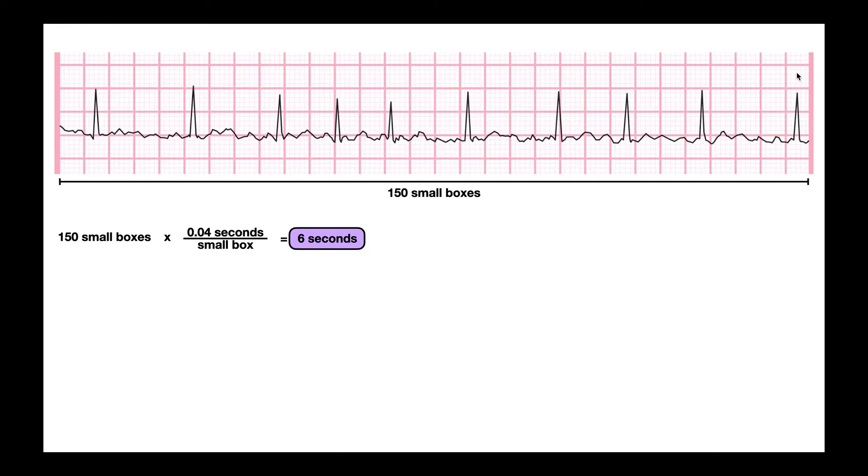So when we do the 6-second method, we're counting for everything within this entire normal EKG strip. To do the 6-second method, I'm going to count the number of QRS complexes. There's no special cutoff that you have to do because the entire strip is defined as 6 seconds. So I just count the total number of QRS complexes within this strip: 1, 2, 3, 4, 5, 6, 7, 8, 9, 10. There are 10 QRS complexes within this strip.